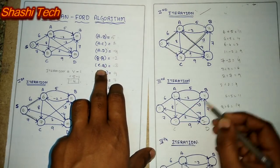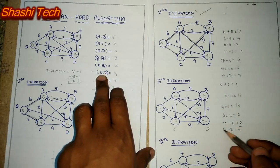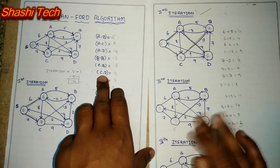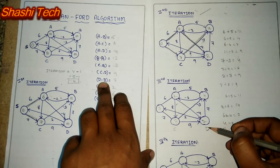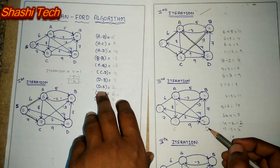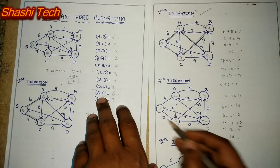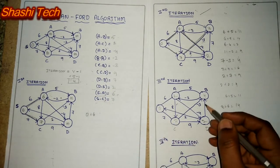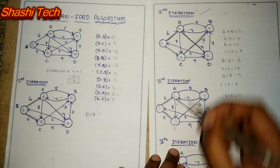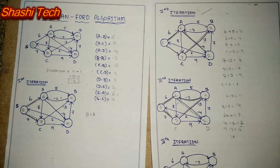Then C to B: 7 minus 3 is 4 — same as it is. Then C to D: 7 plus 9 is 16, greater than 2, so you need not replace. From D to B: 2 plus 7 is 9, greater than 4, so you need not replace. From D to S: it is 2, which is greater than 0, so you need not replace here also. From S to A — already done. We are getting the path. You need to state the path. As previous, you are getting it, and you are getting one more path here. This completes the third iteration.